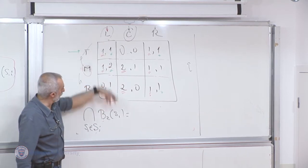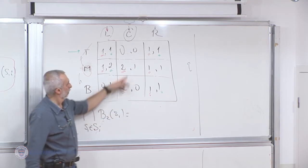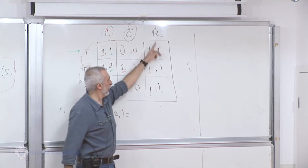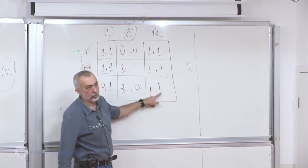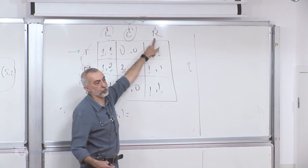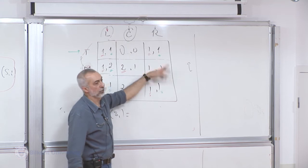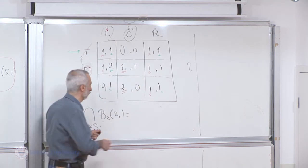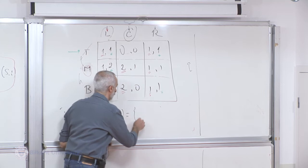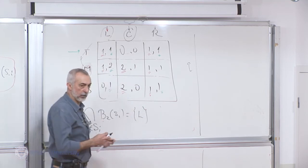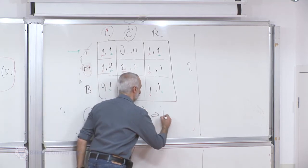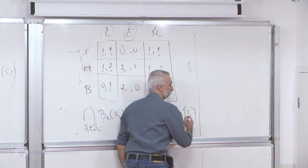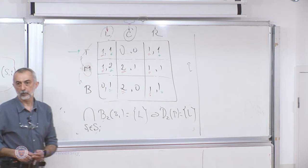Is there any other column which is all marked? C is not marked at all. R is sometimes marked but not always, so R is not the best response to every strategy. Just by looking at it, I can conclude that the intersection consists of L, and hence the dominant strategy of player 2 in this game is L.